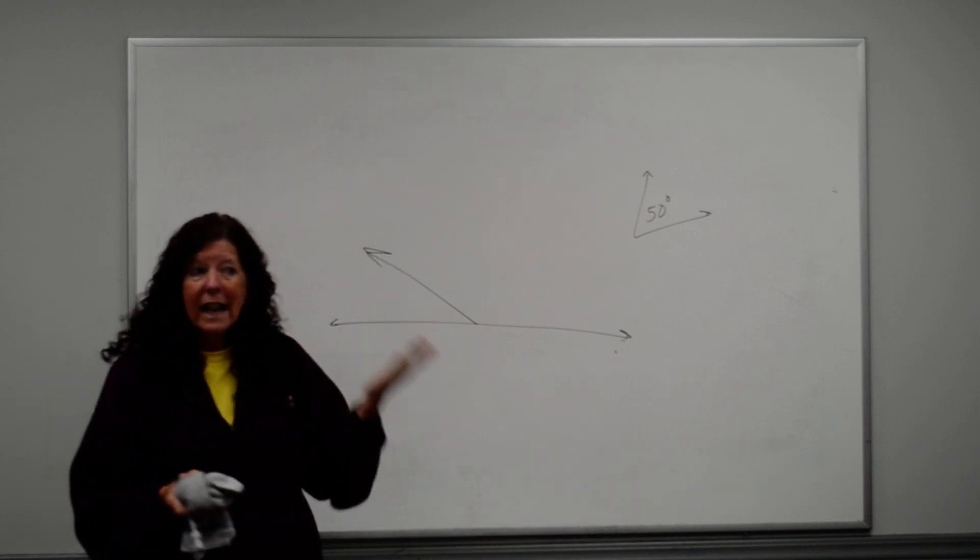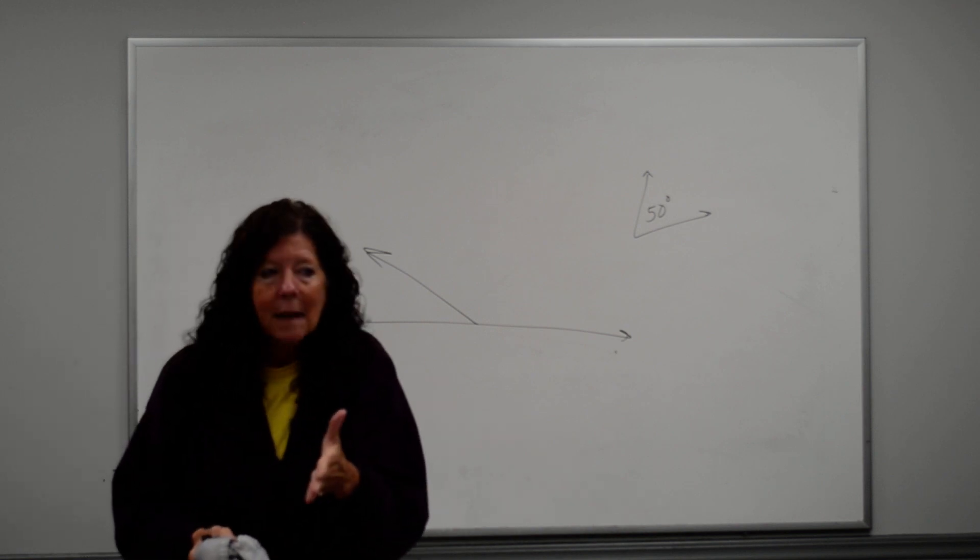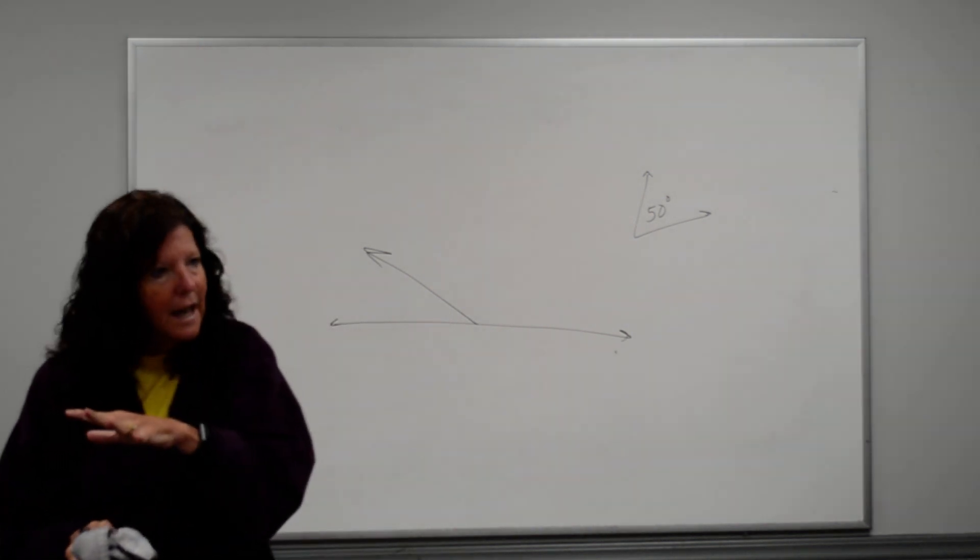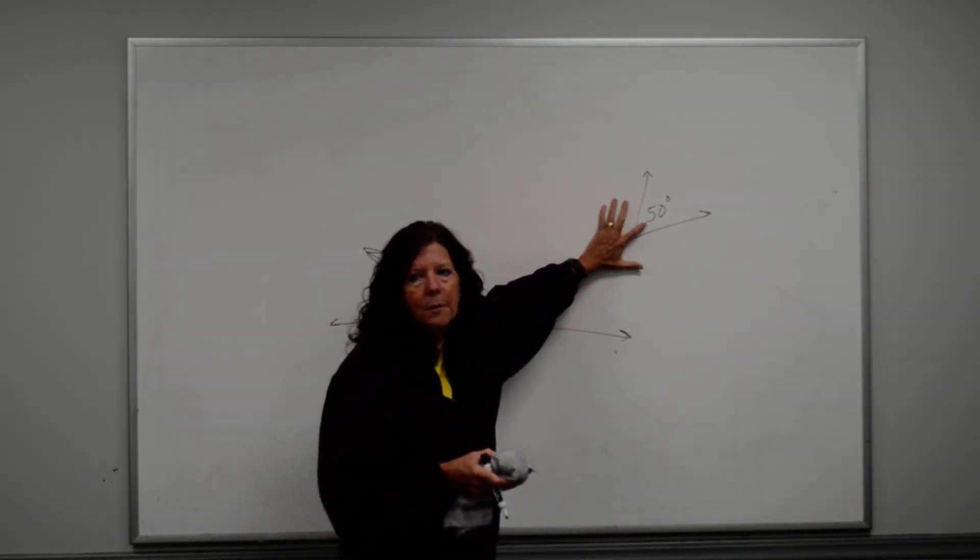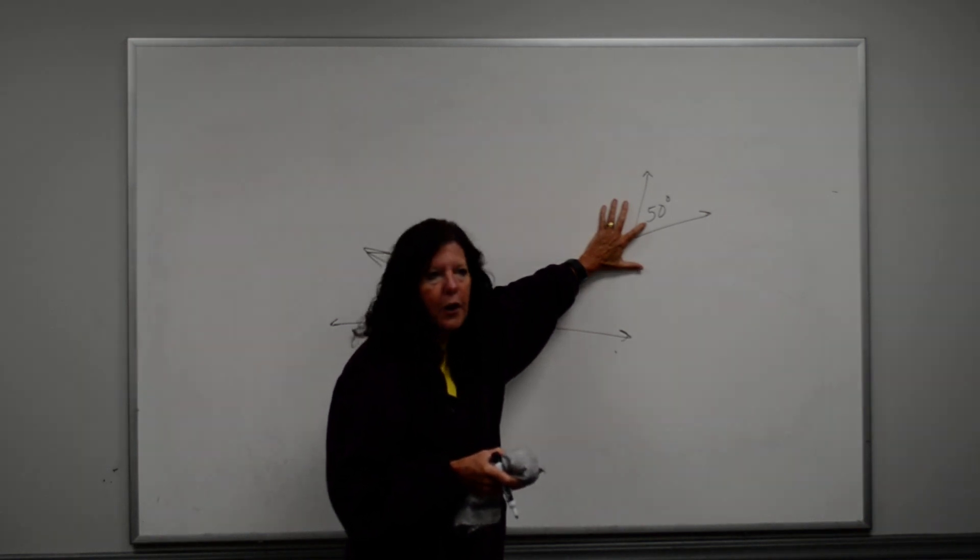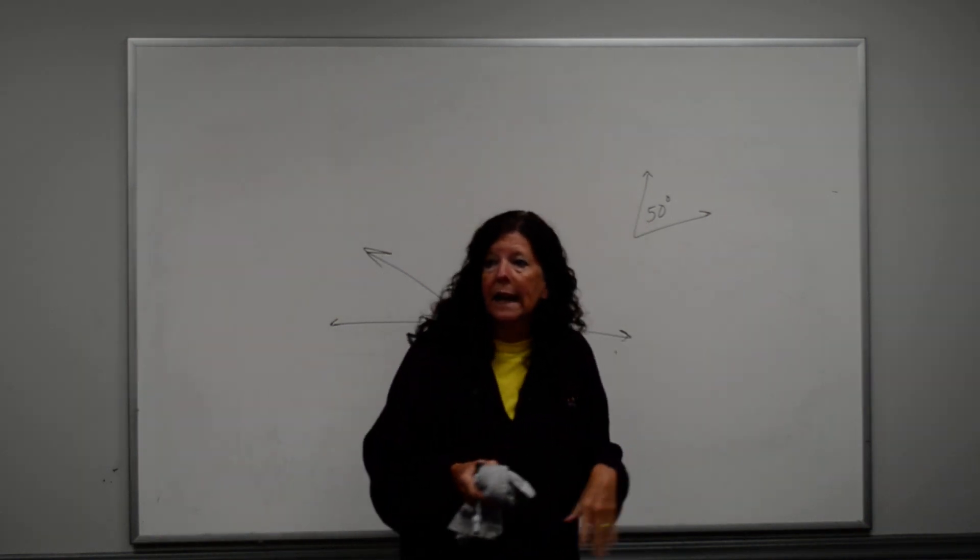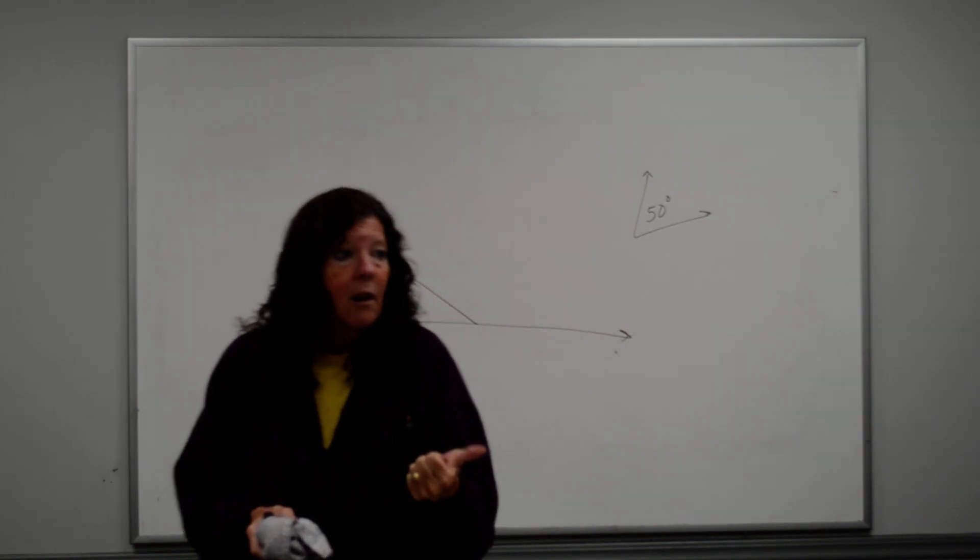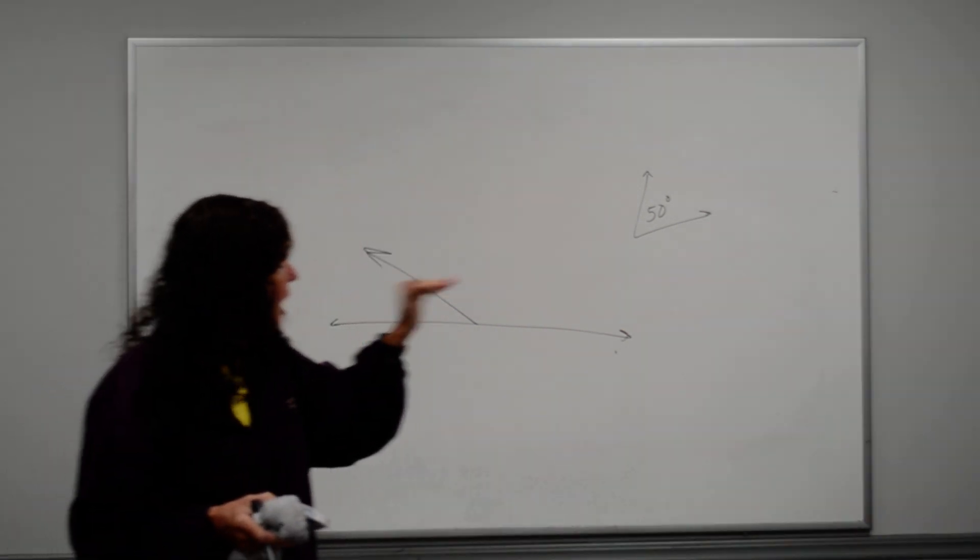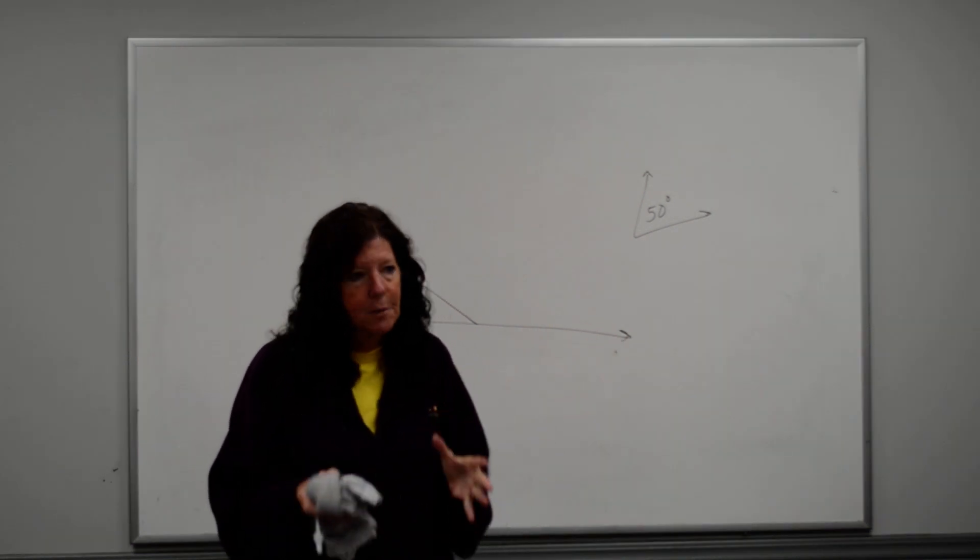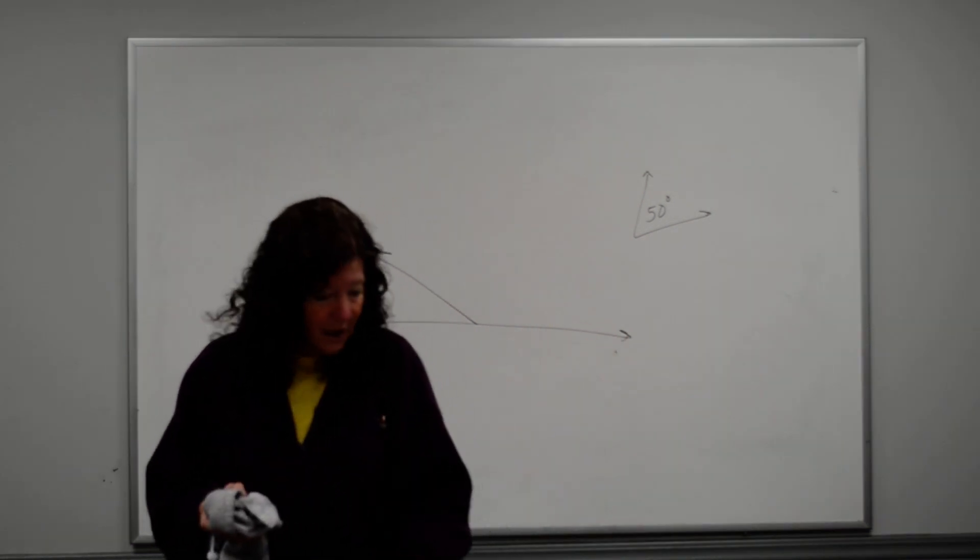Okay, same thing with supplementary, except for then it has to add up to what? 180 degrees. 180 degrees. So the supplement of this angle is what? 130. 130, because together they would have to equal 180. A linear pair is also supplementary angles. Okay? But on complementary and supplementary, they do not have to be adjacent. On a linear pair, they do.